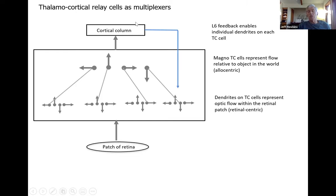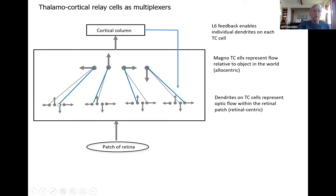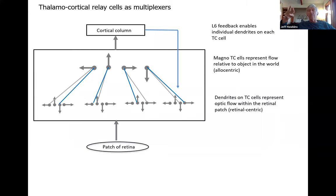The layer 6A feedback enables individual dendrites on each thalamocortical cell. So under one context, when flow is moving in a certain direction on the retinal patch, I want to report it as moving a different direction to the cortex — effectively rotating 90 degrees. You can take these flow patterns and rotate them any way you want at any particular point. Over the entire cortex, you could be rotating all these flow patterns, so movements detected in the world relative to the retina can be translated into movements relative to the object being observed. That's the basic idea.